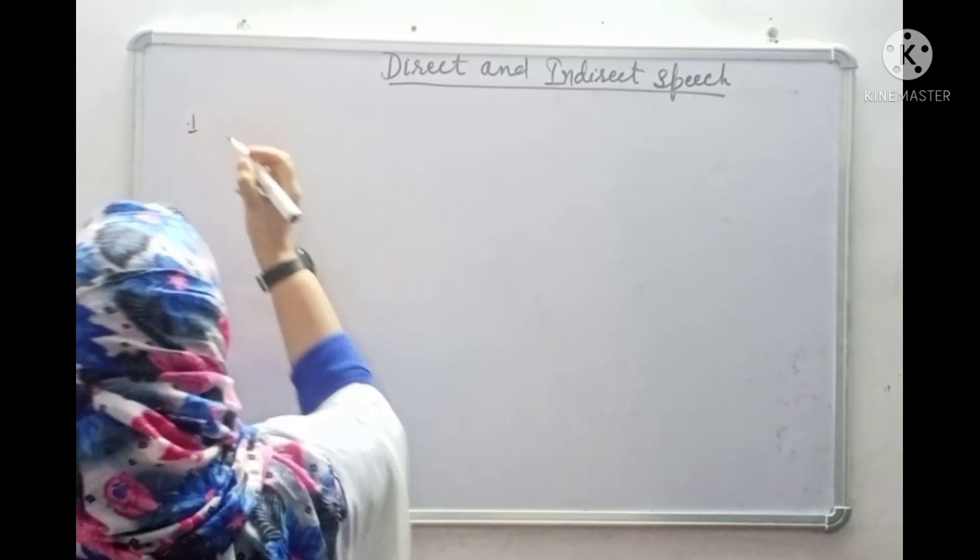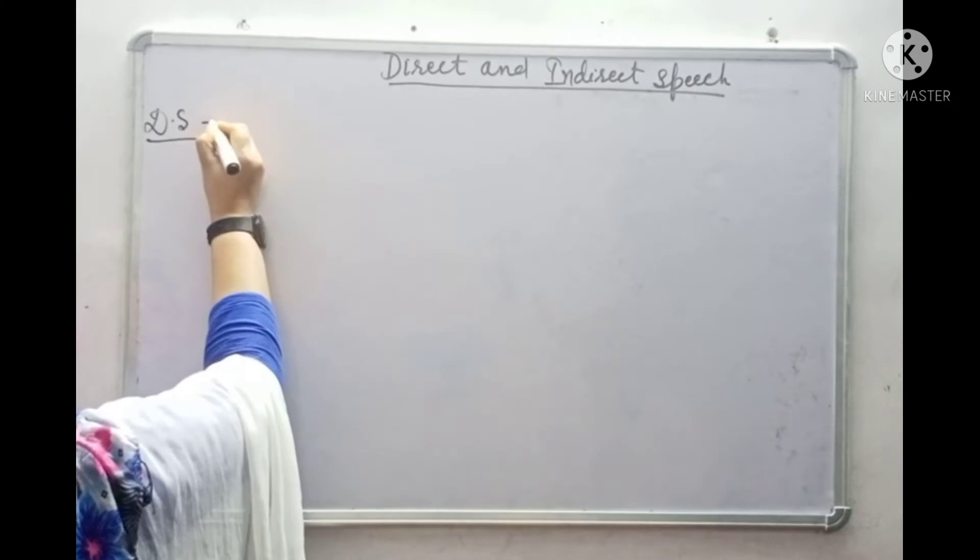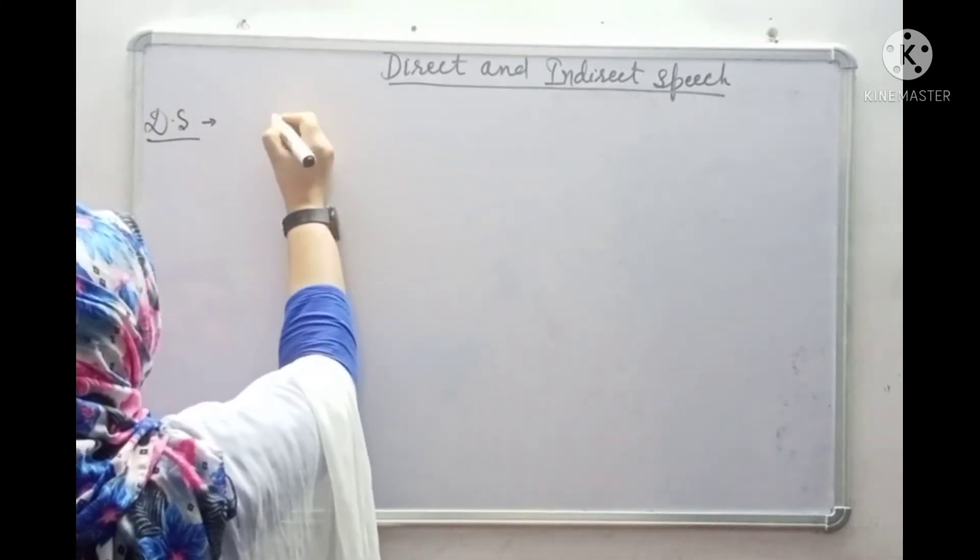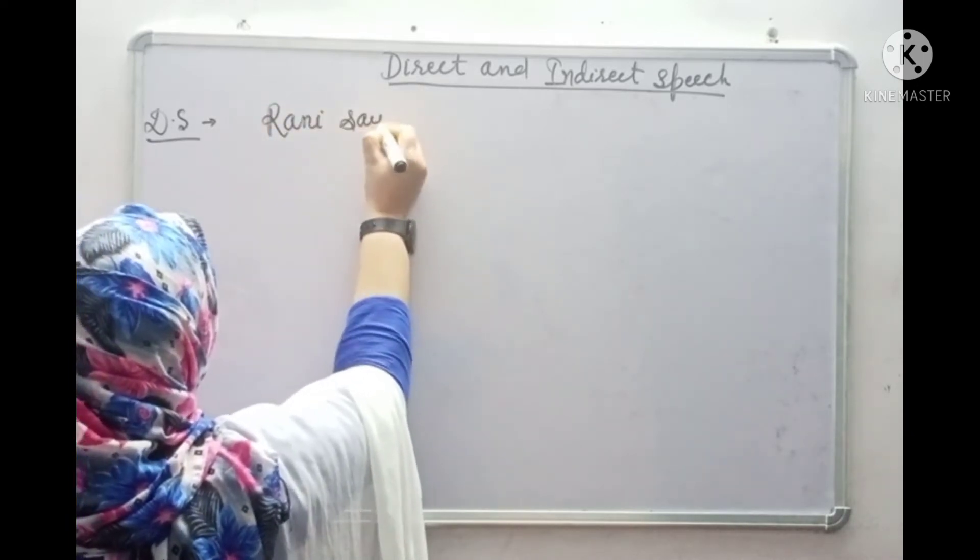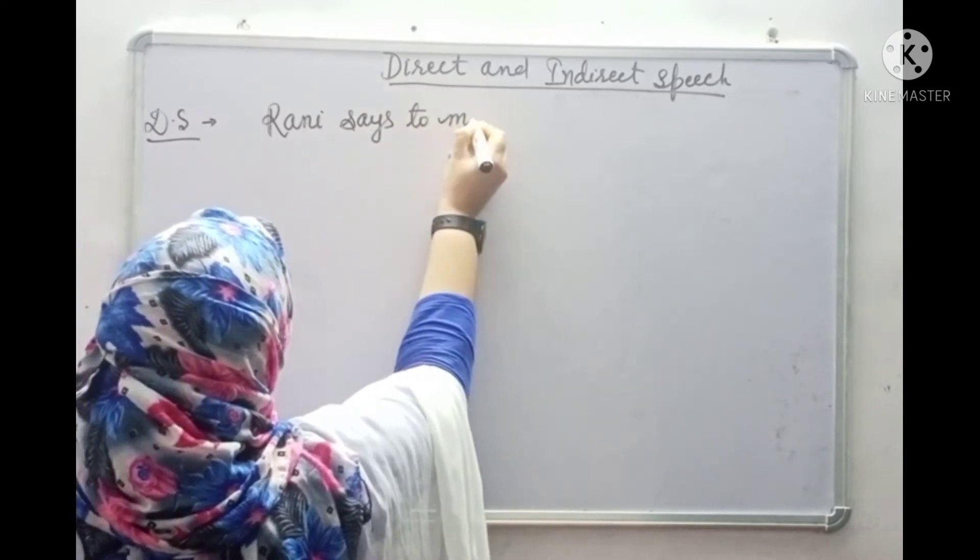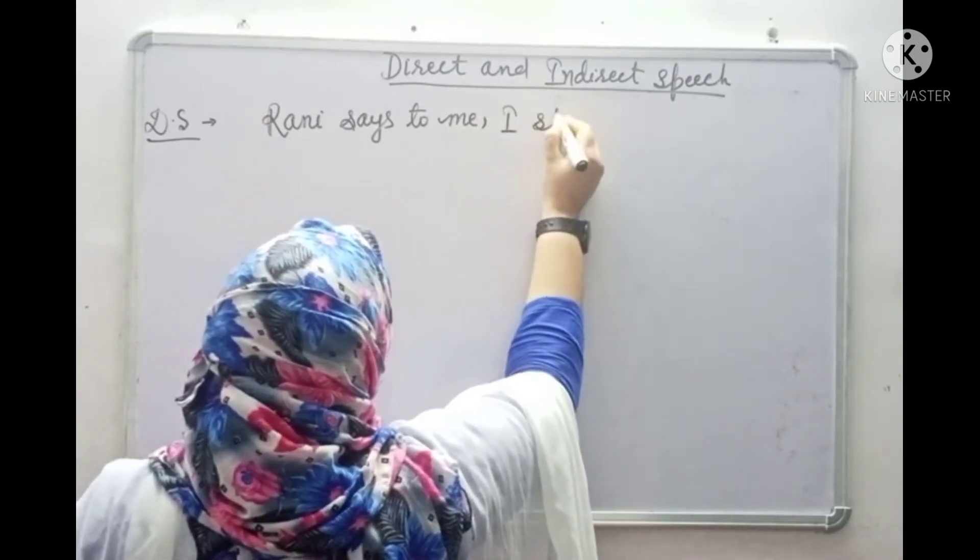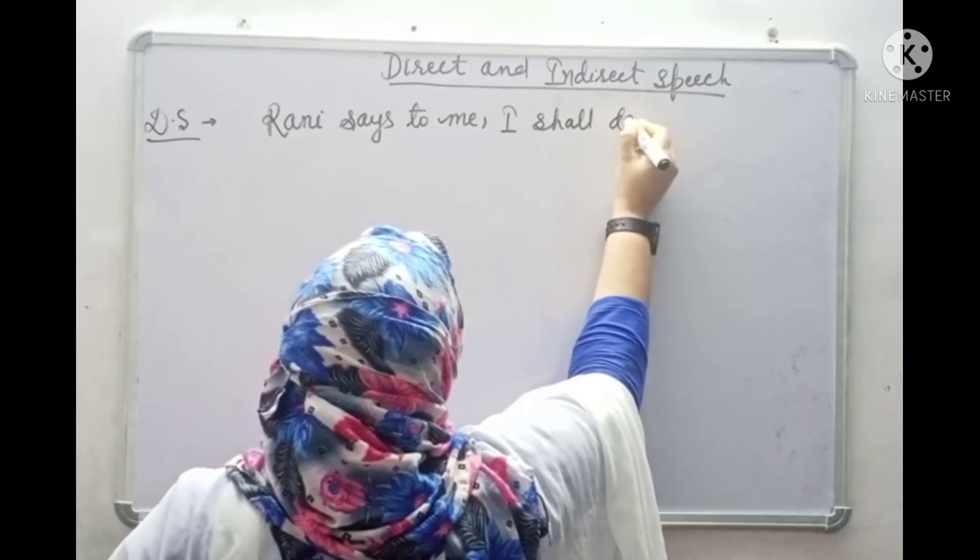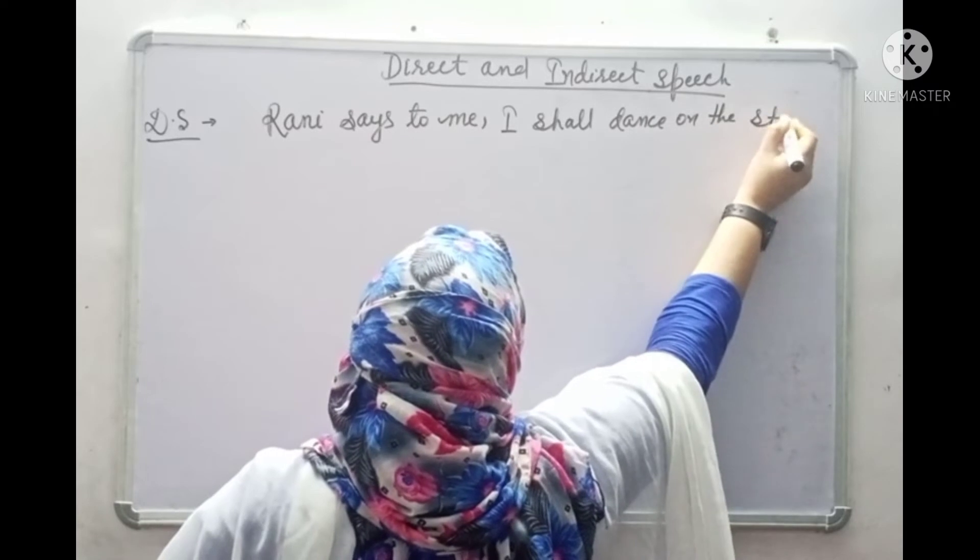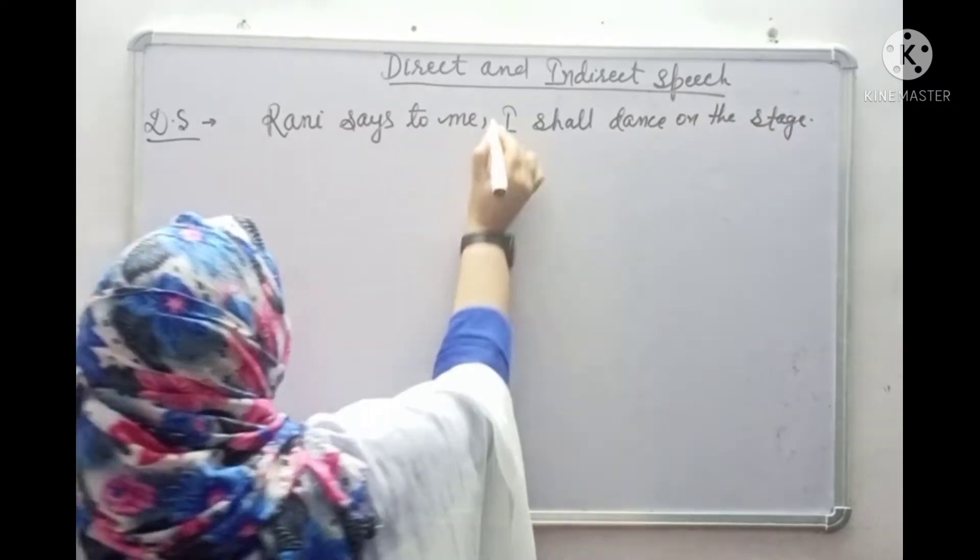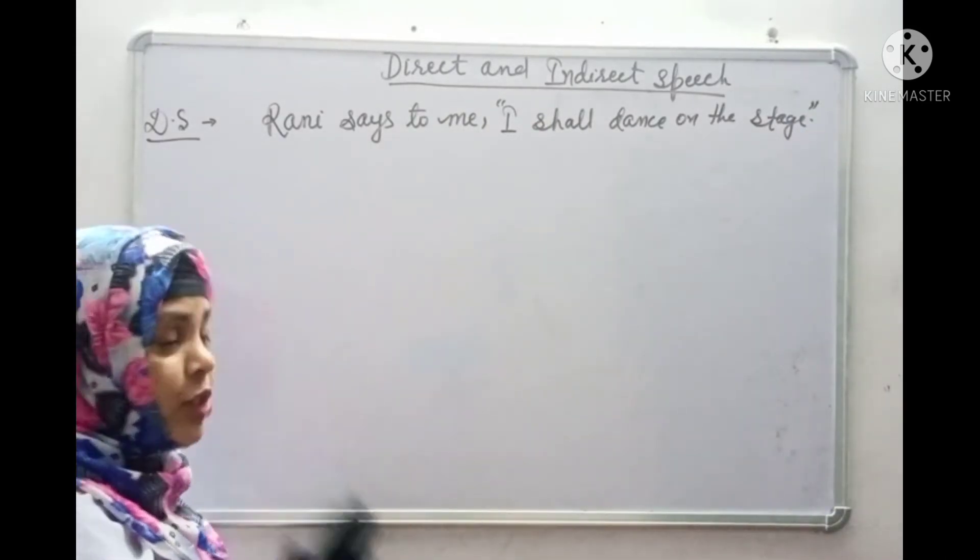Here, first question. This is Direct and Indirect Speech. In my first question, my direct speech is DS. Rani says to me, 'I shall dance on the stage.' Inverted commas start, inverted commas close. This is Direct and Indirect Speech.